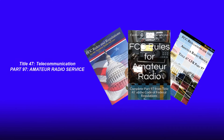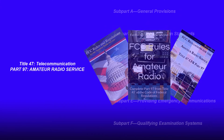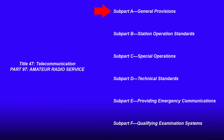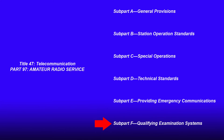Part 97 is actually laid out pretty well in very easily defined sections. The basic sections are: General Provisions, Station Operations Standards, Special Operations, Technical Standards, Providing Emergency Communications, and Qualifying Examination Systems.